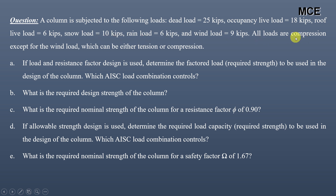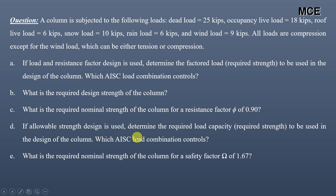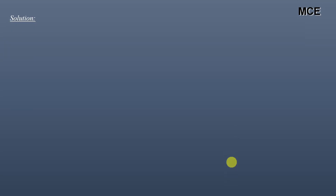Wind load is 9 kips. All loads are in compression except for the wind load, which can be either tension or compression. For LRFD, we have to determine the factored load — the required strength — for the design of the column according to the AISC load combinations. We also need the required nominal strength for a resistance factor of 0.9. For ASD, we determine the required load capacity, which AISC combination controls, and the required nominal strength for a safety factor of 1.67.